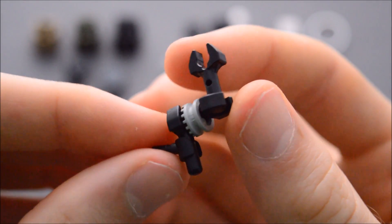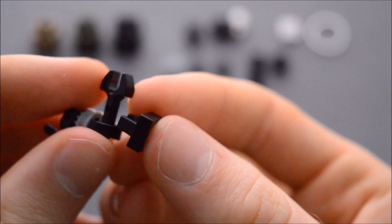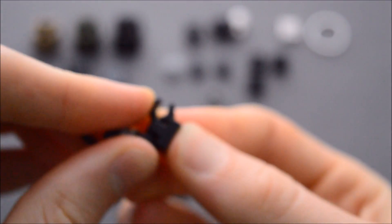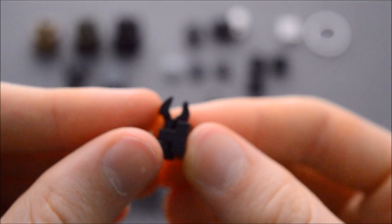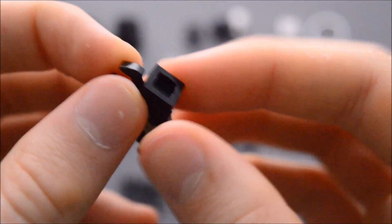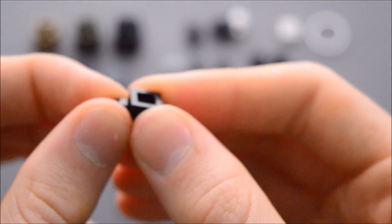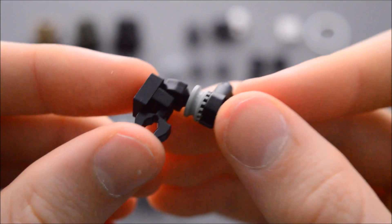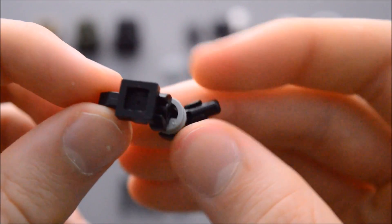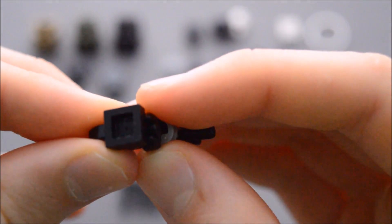So there we have our first leg. Now we need a one by one tile with clip, then we're going to attach it on top like so. Now this is a tight fit but it does work. So there's one leg, now we'll build the other one.